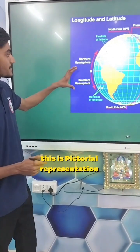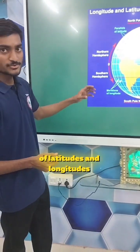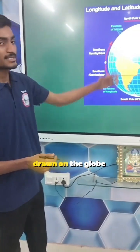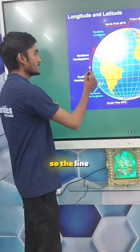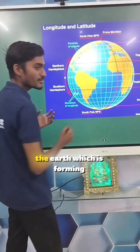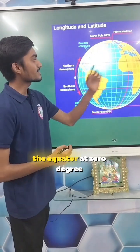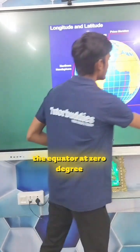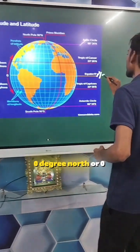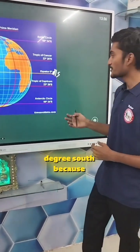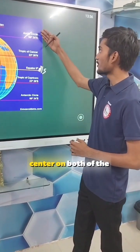This is a pictorial representation of latitudes and longitudes drawn on the globe. The line going through the center of the earth which is forming the equator at zero degrees — it can be written as zero degrees, as the line is in the center on both ends of the earth.